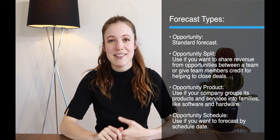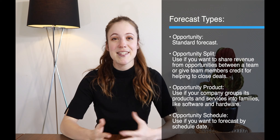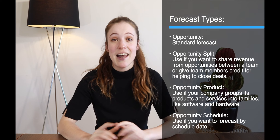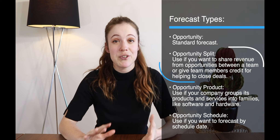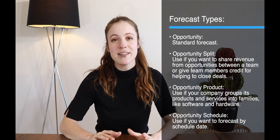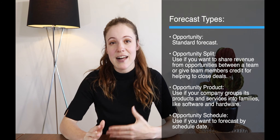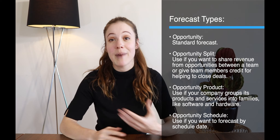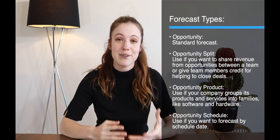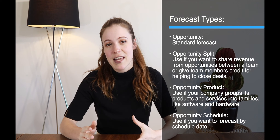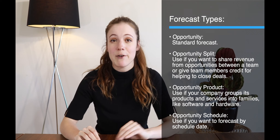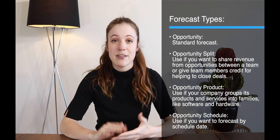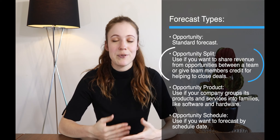The first forecast type is an opportunity — this is a standard forecast type, just your standard forecast, nothing special there. The next forecast type is the opportunity split. We would use this if you wanted to forecast shares of revenue from different opportunities worked on by a team, or if you wanted to give team members different credit for helping to close deals. If you're splitting up opportunities by revenue or by credit, the forecast type you want is the opportunity split.